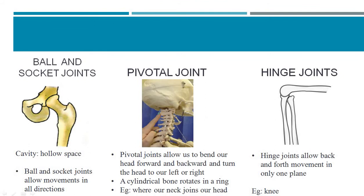Next we come to the topic of joints. Joints are basically movable and immovable joints. Movable joints, as the name suggests, are joints where movement is possible. They are basically of three types: ball and socket joint, pivotal joint, and hinge joint.